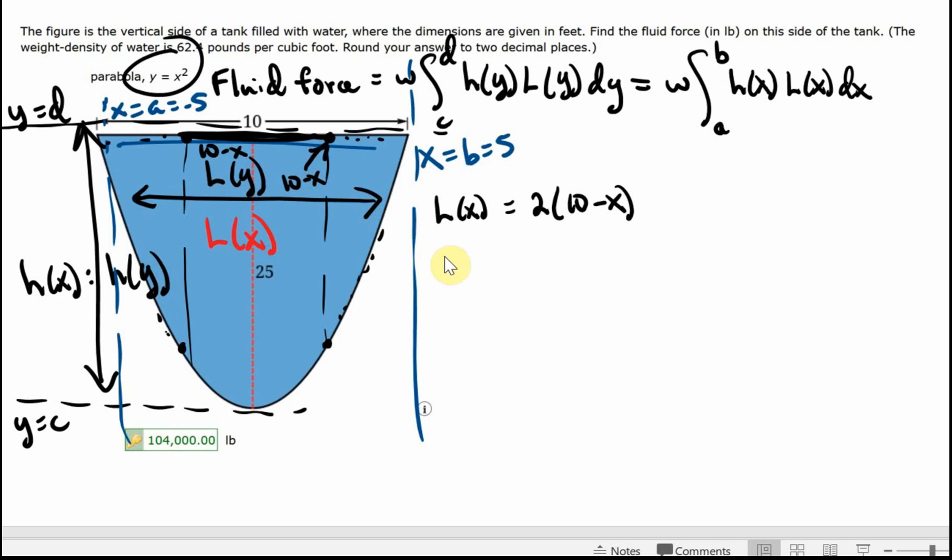Now since I put this with respect to X, my height is easy. My height is just X. Now doing that would avoid me having to convert this from Y equal to X squared to X equal to square root of Y, and you have to deal with that. If you deal with respect to Y, looking at this formula, then you have to also change H of Y, and that's kind of tricky. So I think the way I have transformed it works out a little bit easier.